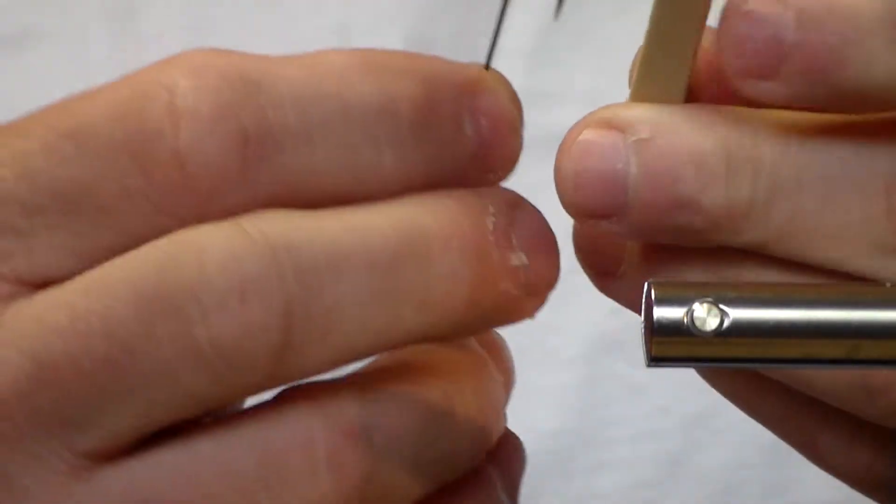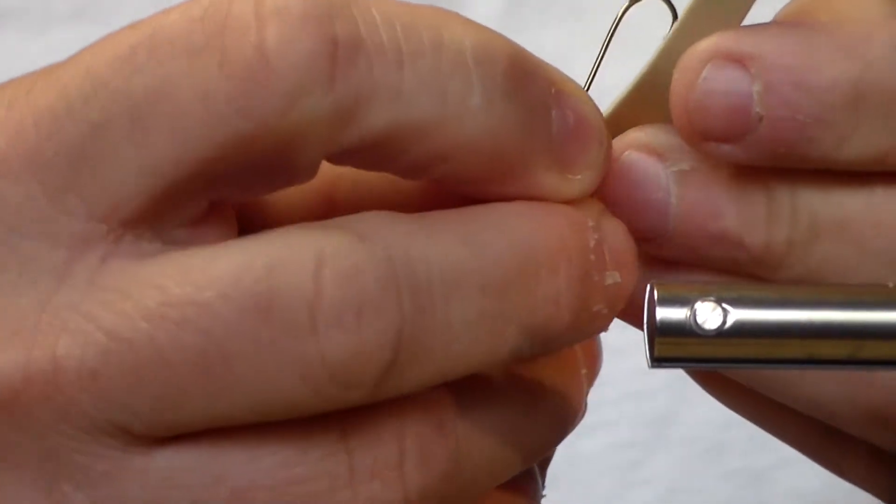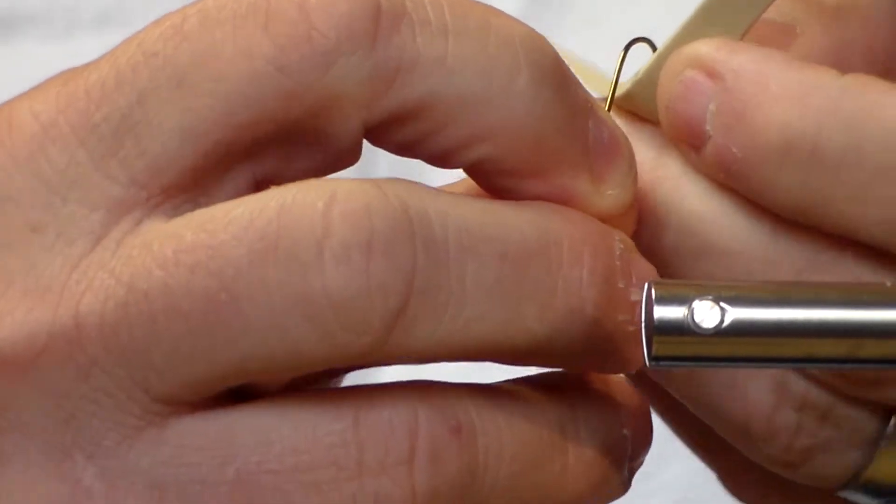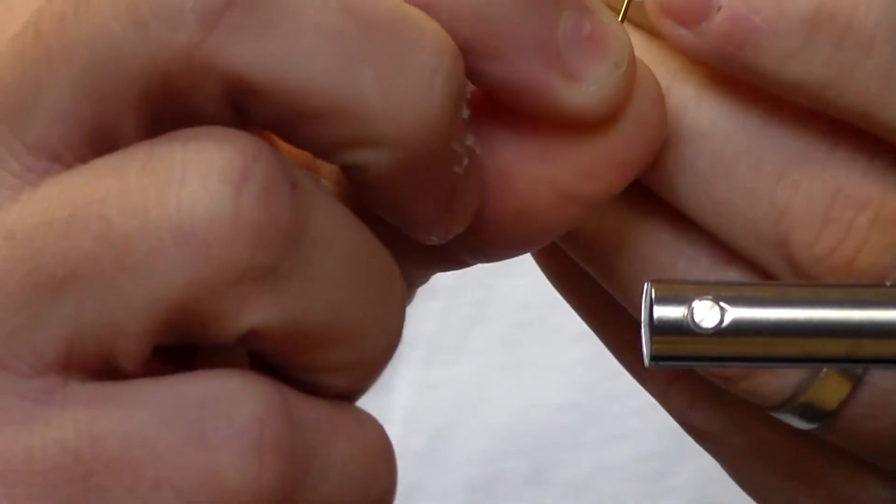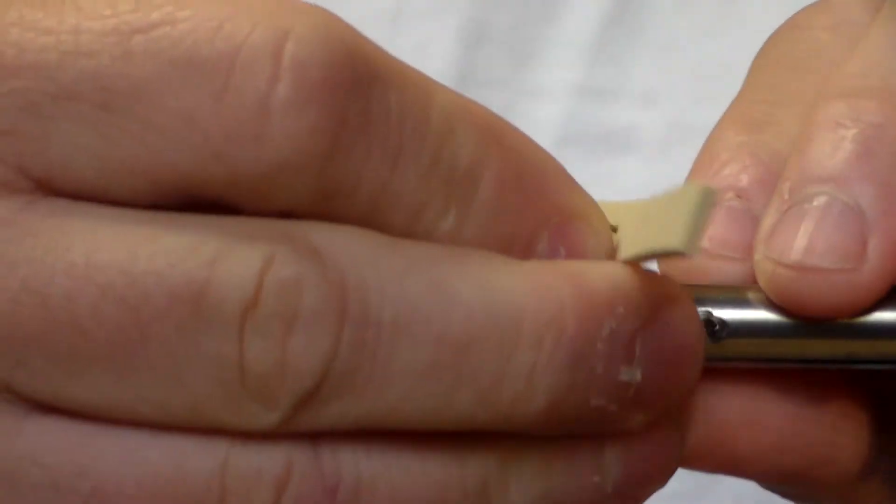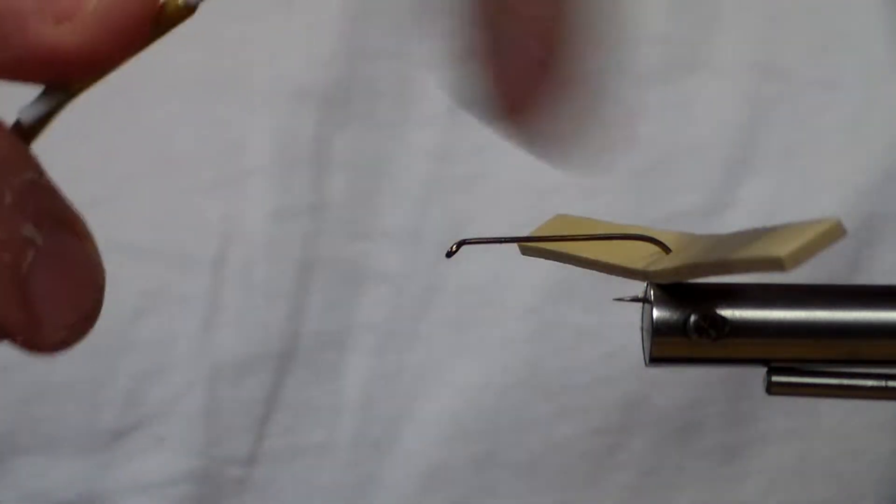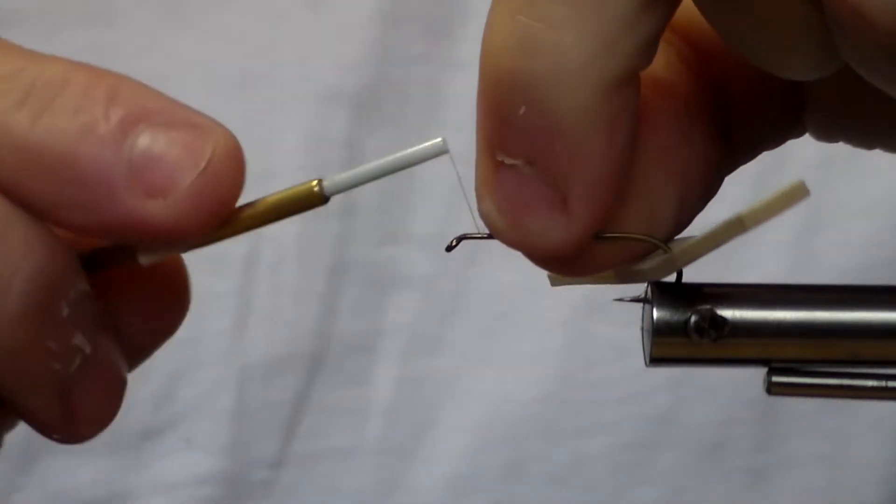First thing we do is we're going to pierce the foam here with the hook in the middle. Attach it. Lay down just a little thread.